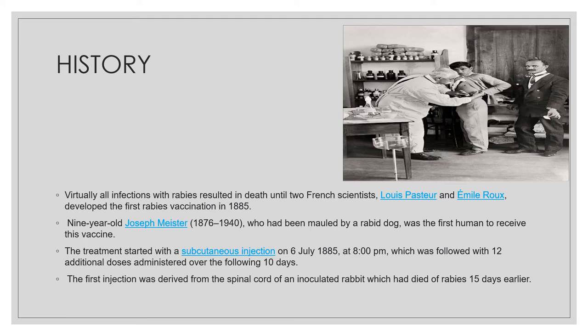Historically, virtually all rabies infections resulted in death until Louis Pasteur and Emil Roux developed the first rabies vaccination in 1885. A nine-year-old boy, Joseph Meister, who had been mauled by a rabid dog, was the first human to receive this vaccine. The treatment began as a subcutaneous injection on July 6, 1885, marking a historical milestone in the history of rabies.